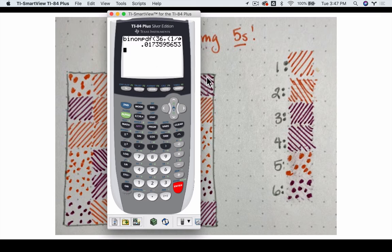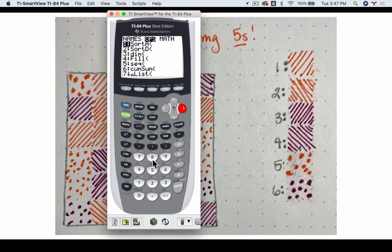But what about the probability of getting no fives, or one five, or two fives? What are all those different probabilities? How do we find them all quickly? Well, we start by setting up a sequence. Click second, and stat, to get your list commands. I'm going to go to ops, right here, and go to choice 5, which says sequence.